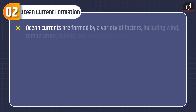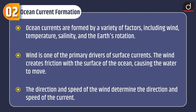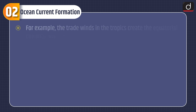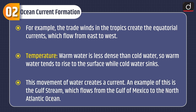Ocean currents are formed by a variety of factors including wind, temperature, salinity, and the Earth's rotation. Wind is one of the primary drivers of surface currents. The wind creates friction with the surface of the ocean, causing the water to move. The direction and speed of the wind determine the direction and speed of the current. For example, the trade winds in the tropics create the equatorial currents, which flow from east to west.